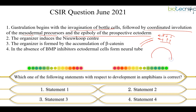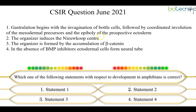As the involuting layer of cells converges and becomes a thin layer, the outer layer of cells covers the entire embryo — this process is called epiboly. Epiboly refers to the covering of the entire embryo by the prospective ectoderm. So the first statement — gastrulation begins with invagination of bottle cells, followed by involution of mesodermal precursors and epiboly of prospective ectoderm — is actually the true statement.